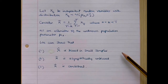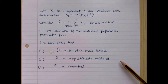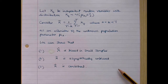These properties are: first of all, that x tilde is biased in small samples. Secondly, it's asymptotically unbiased, so as the sample size becomes large, its expected value converges on the true value. And finally, that x tilde is consistent — in other words, it converges on the true value in probability limit.